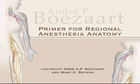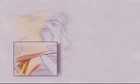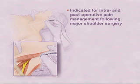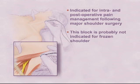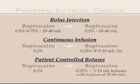It is advisable to study the appropriate essential anatomy as outlined in the primer of regional anesthesia anatomy before studying the continuous interscalene block. The continuous interscalene block is indicated for intra- and post-operative pain management following major shoulder surgery. Examples of such surgery include shoulder arthroplasty, rotator cuff repair, and other major shoulder surgery. This block is probably not indicated for frozen shoulder.